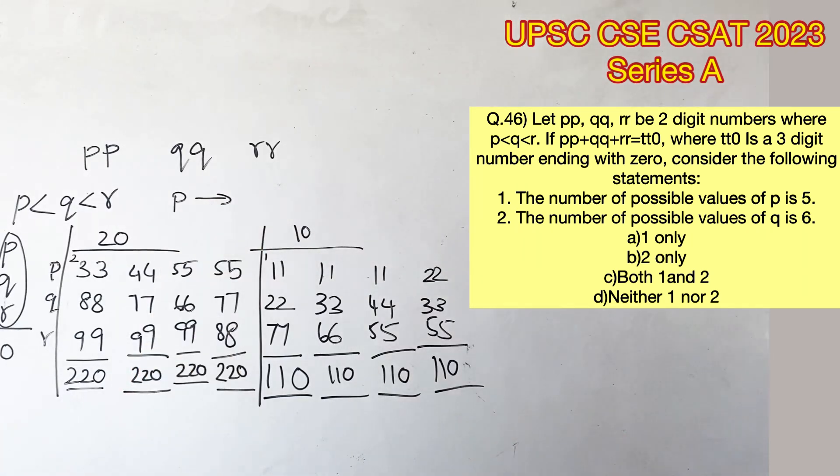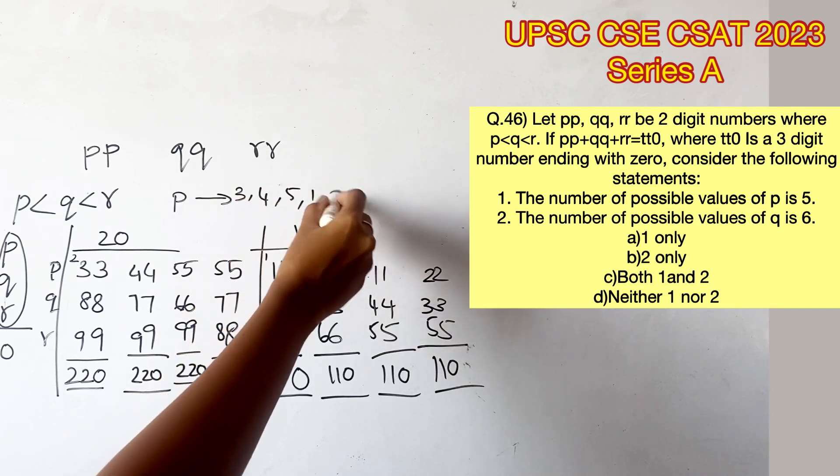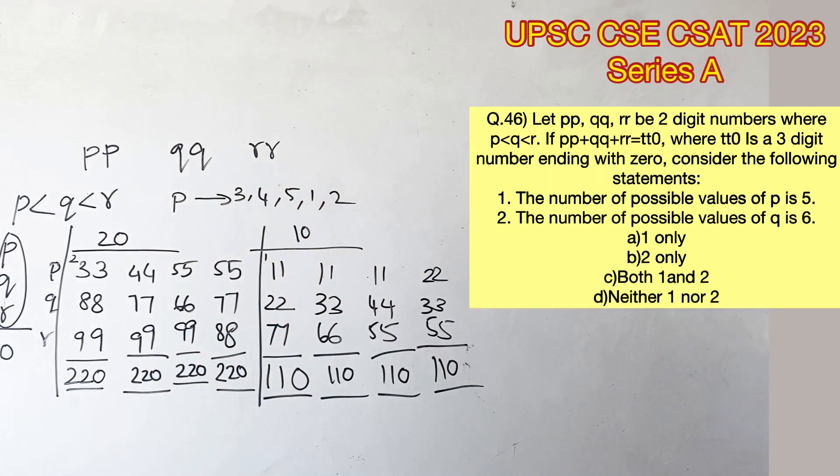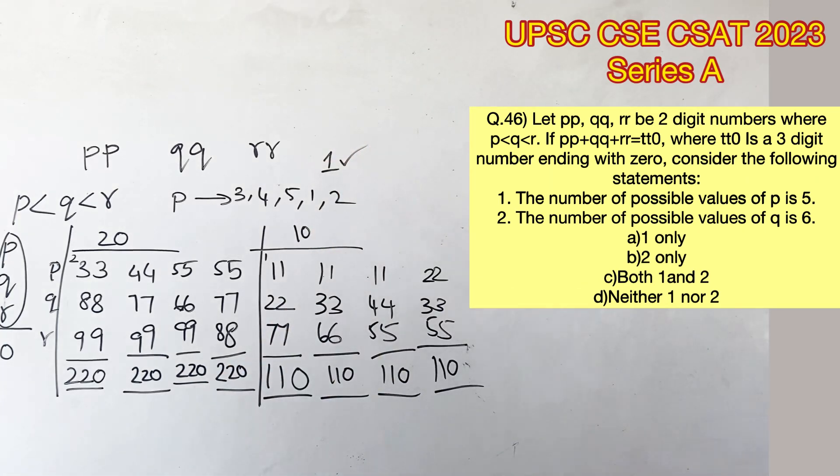The first statement says the number of possible values of P is 5. Considering the values of P, they are 3, 4, 5, 1, and 2. So there are 5 different possibilities, which means statement 1 is true.